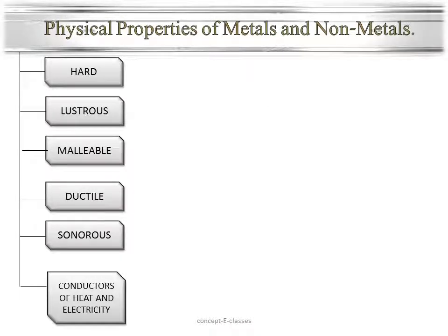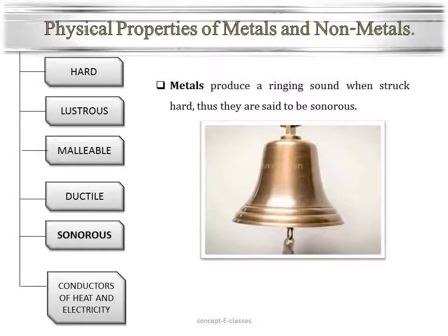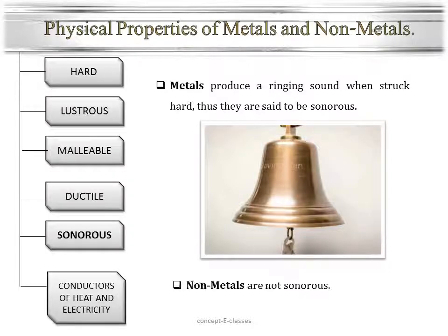The fifth physical property is that metals are sonorous in nature. Have you ever dropped a metal coin and a piece of pencil? We can find the difference in the sounds they produce. Things made of metal produce a ringing sound when struck hard — those things are said to be sonorous. For example, the bells used in churches or temples are made of metals. Have you ever seen a bell made of wood? No. Hence, nonmetals are not sonorous in nature.